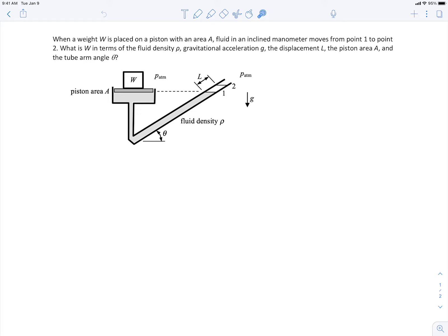In this example, we're told we have a weight W placed on a piston here. The piston area is capital A. It's atmospheric pressure outside of this. And then that piston pushes down on the working fluid here, which has a density of rho, and then pushes down here, and that fluid moves up a distance from point 1 to point 2 here.